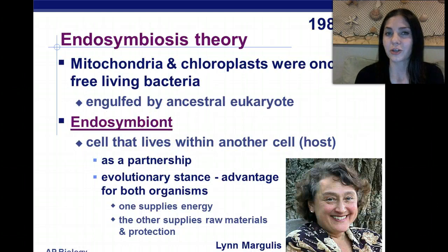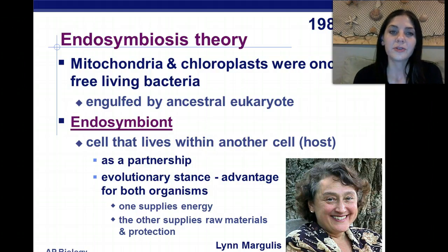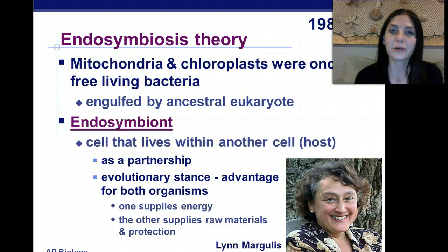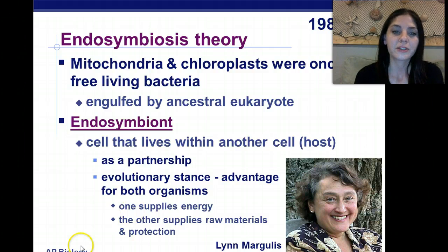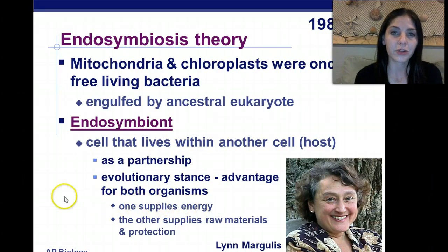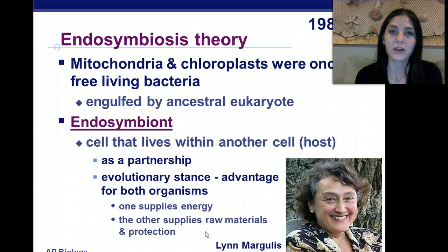Make sure you take good notes on the endosymbiosis theory — you will definitely see this on a free response question. This states that mitochondria and chloroplasts were once their own free-living bacteria. They were engulfed by an ancestral eukaryotic cell and became an endosymbiont. This is a mutualistic symbiotic relationship: the mitochondria or chloroplast supplies the cell with energy, while the cell supplies the organelles with raw materials and protection.